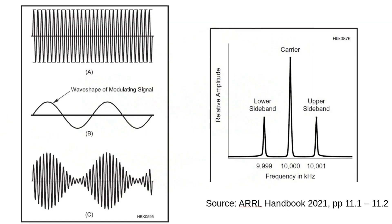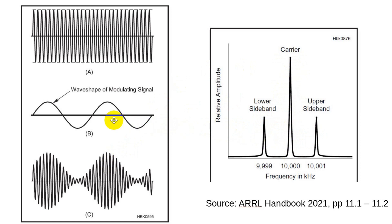If we look at what's in the ARRL Handbook — the 2021 edition — the section on modulation shows a carrier wave, the wave shape of the modulating signal, and the resulting output, which is very nearly 100% modulated using a single tone. If you were to look at this in the frequency domain, with frequency across the bottom — say this is 10 megahertz — there's a carrier, an upper sideband, and a lower sideband. The lower sideband is separated from the carrier by its frequency. If you add a real speech waveform, you'll see stuff here that is repeated but reversed.